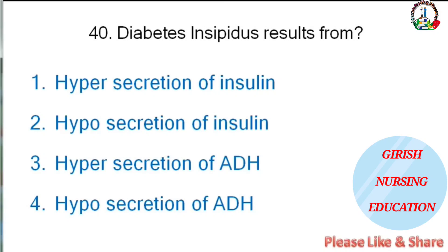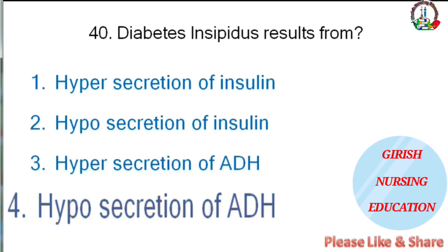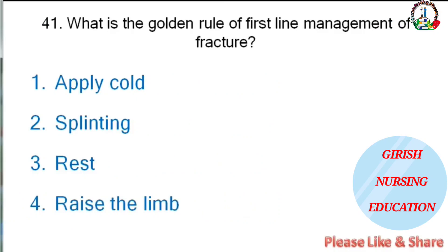Diabetes insipidus results from — hyposecretion of insulin, hypersecretion of insulin, hypersecretion of ADH, or hyposecretion of ADH? The correct answer is hyposecretion of ADH.